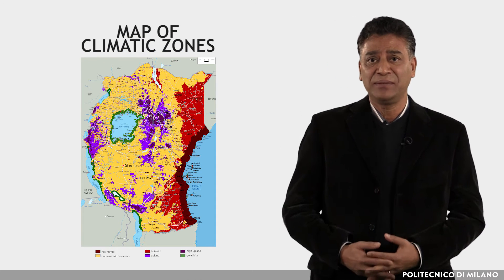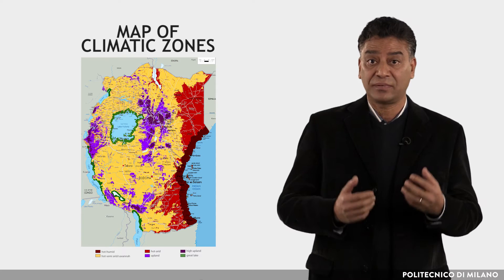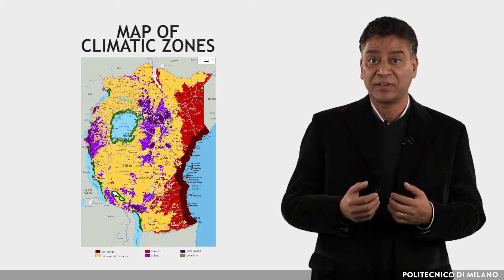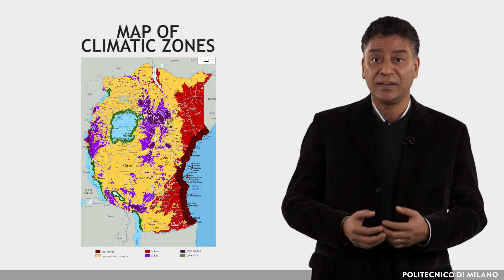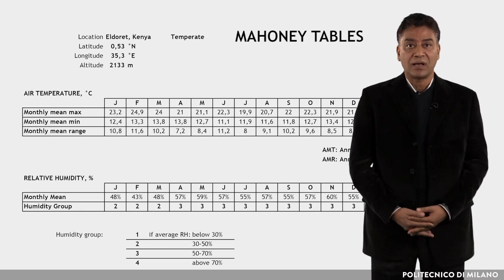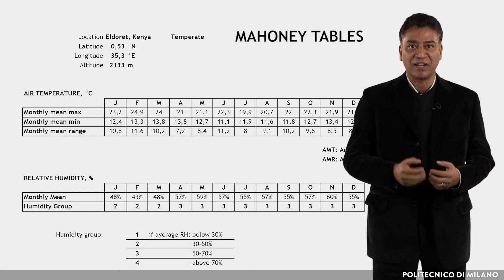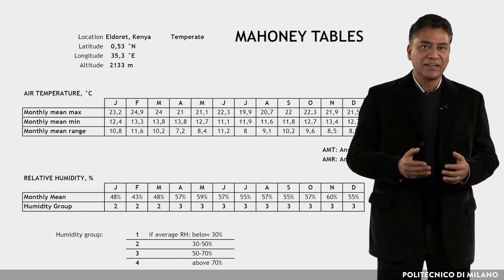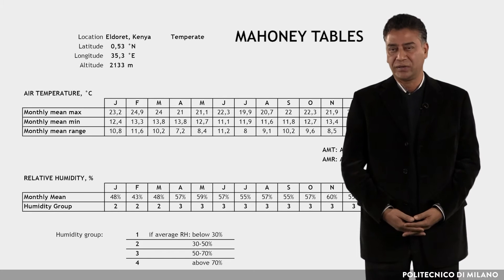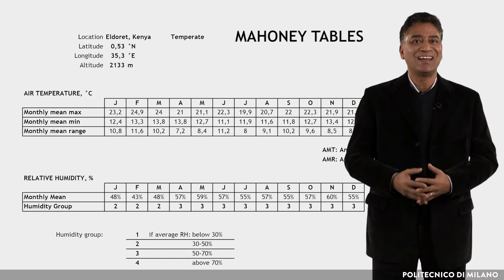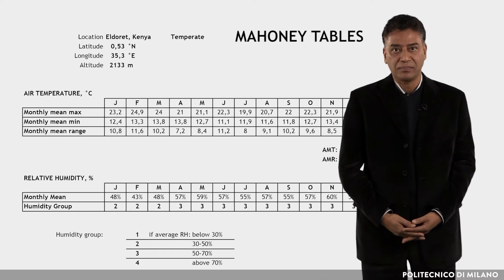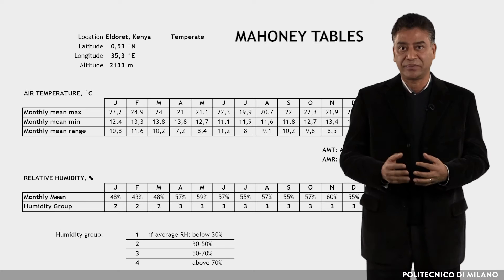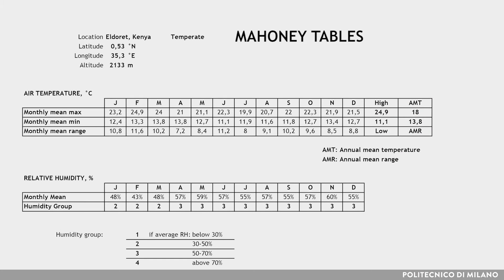The combination of these three methods led to the development of a map of climatic zones based on the effect of the climatic context on building design strategies. Mahony tables are a set of reference tables used in architecture as a guide to climate-appropriate design. They are named after architect Karl Mahony and were first published in 1971 by the United Nations Department of Economic and Social Affairs. The figure shows an example of Mahony tables for an EAC location and the derived building design strategies.